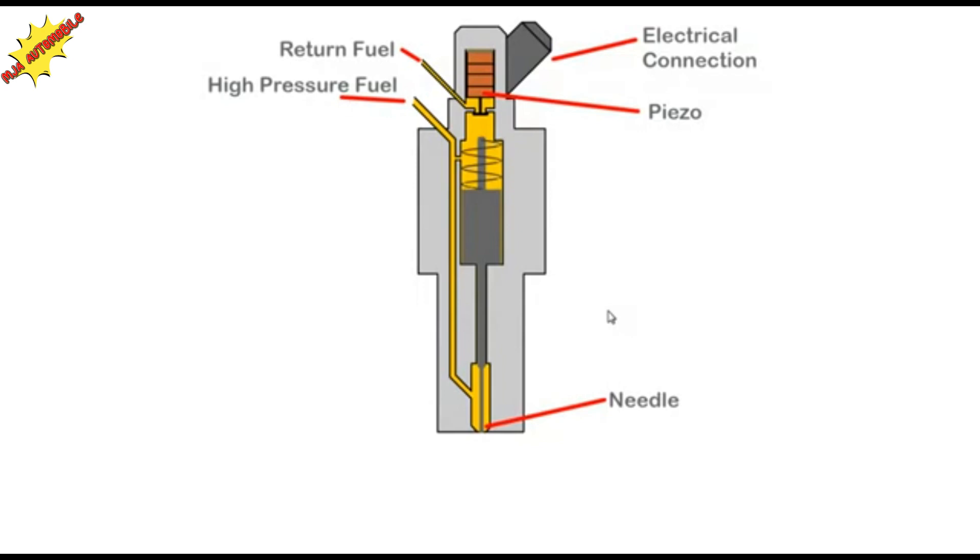Here we show the operation of a fuel injector. Fuel enters through this pipe and some flows into the small chamber above the needle through a small orifice. This high pressure fuel keeps the injector closed.